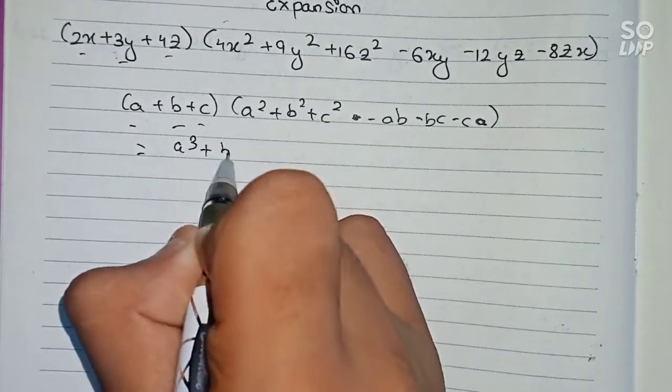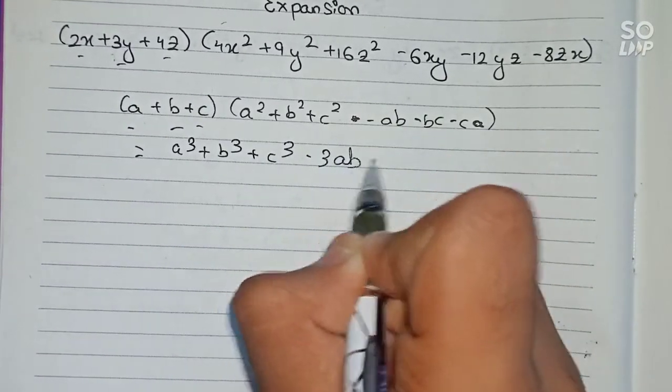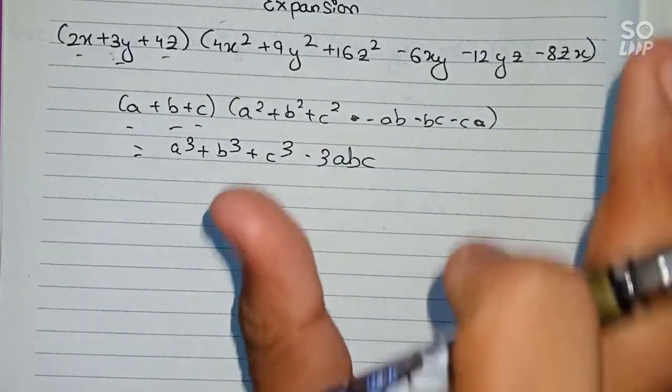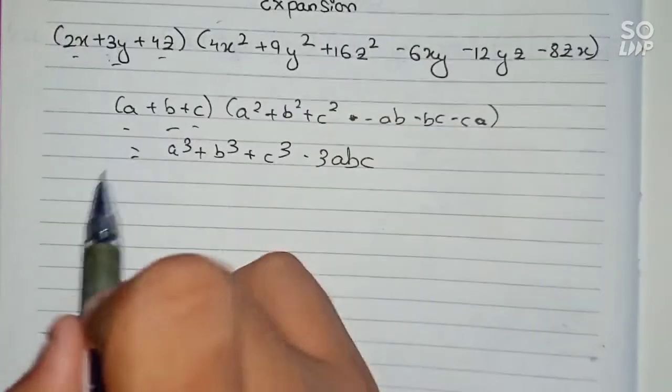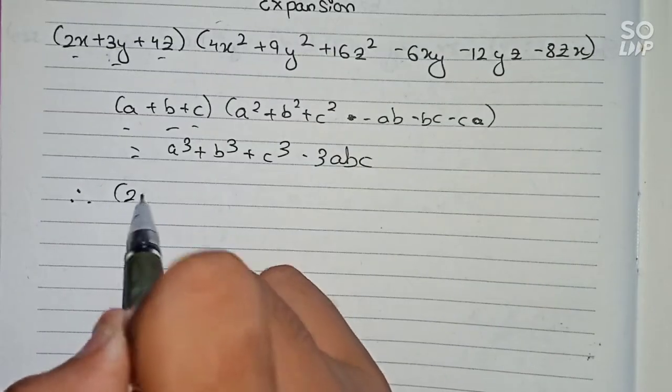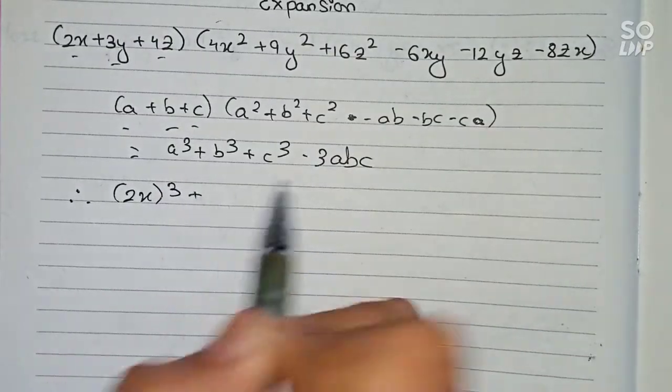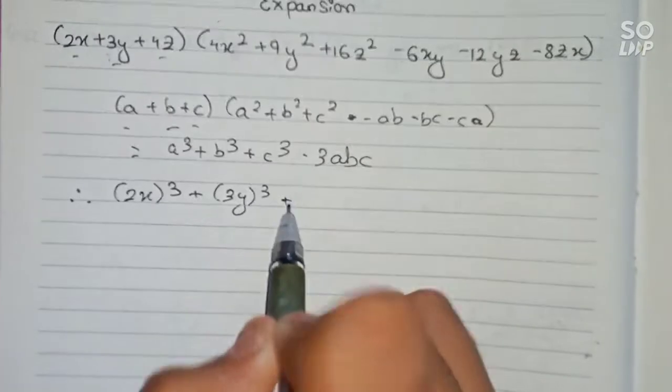The answer for this formula will be a³ + b³ + c³ - 3abc. Now you have to arrange this question in this formula. So according to that, if we arrange it, therefore first a³ means 2x to the power 3, plus b³ means 3y to the power 3, plus c³ means 4z to the power 3.